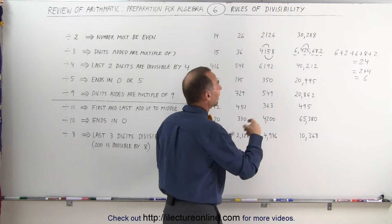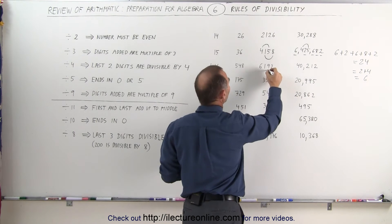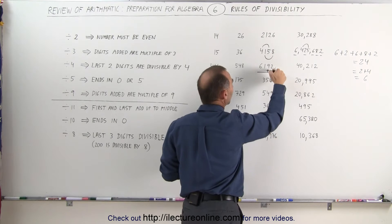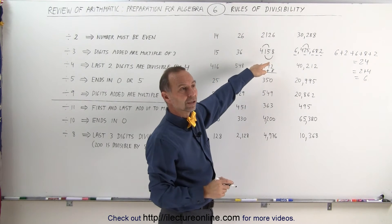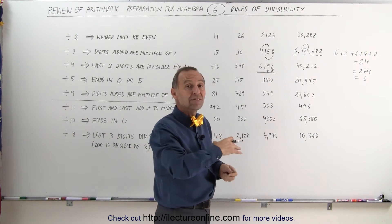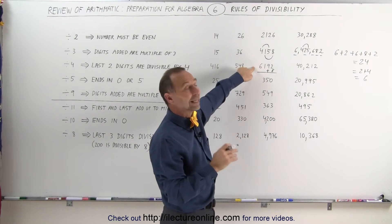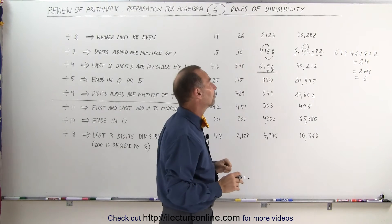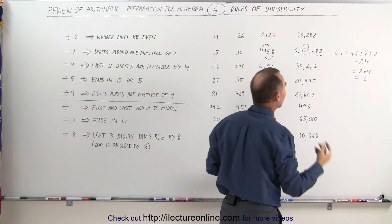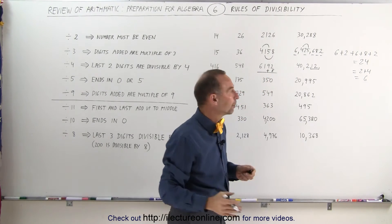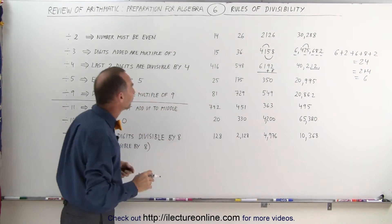How about 6,192? Another thing I look for is if I can add a multiple of 4 to this number — for example, if I add 8, which is divisible by 4, that gives me 6,200. That means any number that ends in 100, 200, or 300 can be divided by 4, so I know this one can be divided by 4. Here I look at the last two digits again — since 12 can be divided by 4, the whole number can be divided by 4.